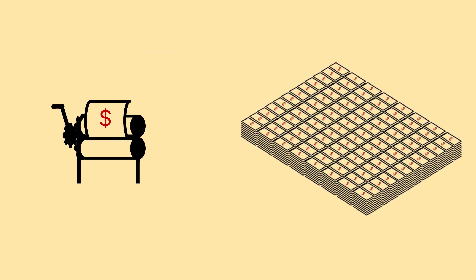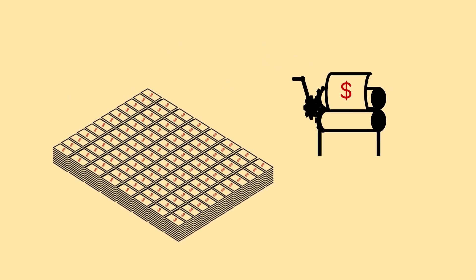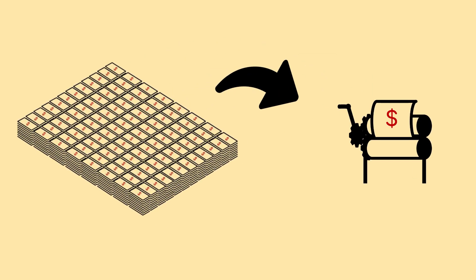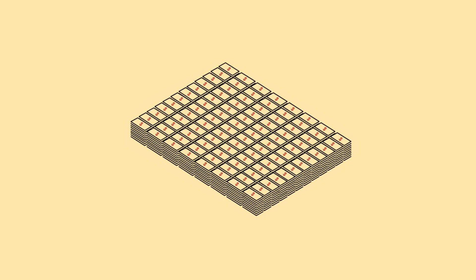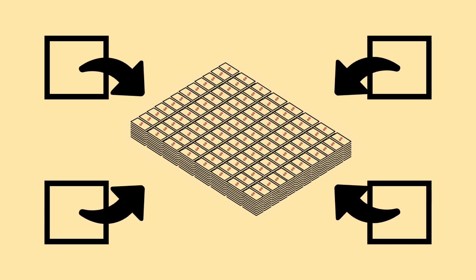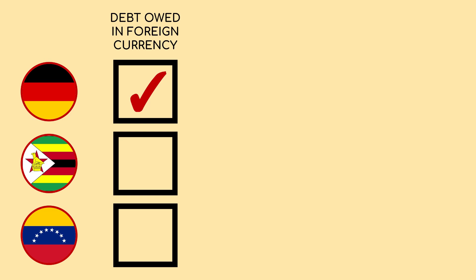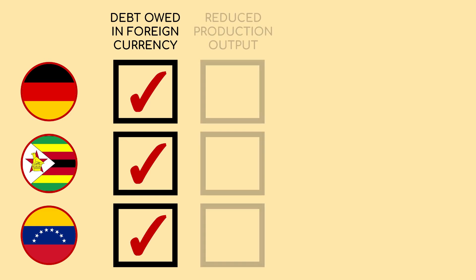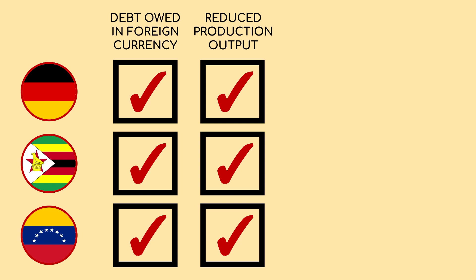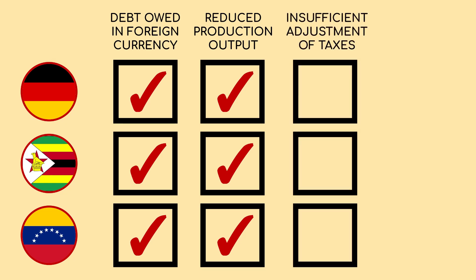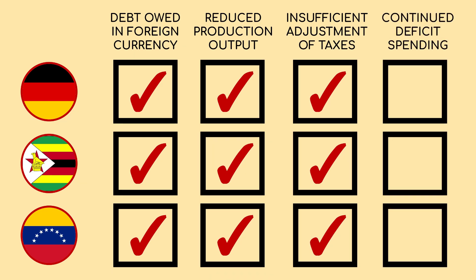The increased printing of money happened after inflation had begun. In all these cases, the hyperinflation was really caused by a particular combination of factors: debt owed in foreign currency, reduced production output, insufficient adjustment of taxes, and continued deficit spending.